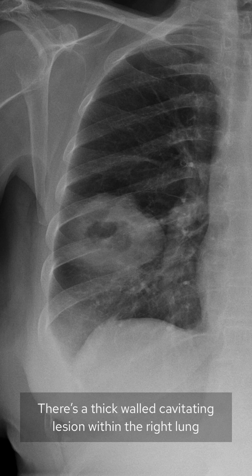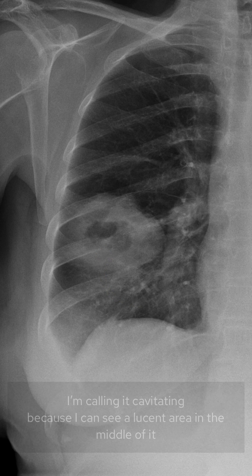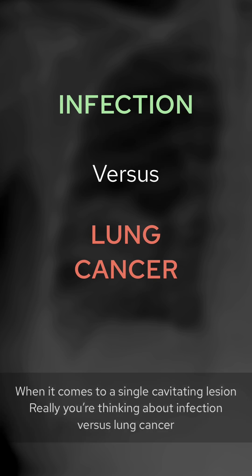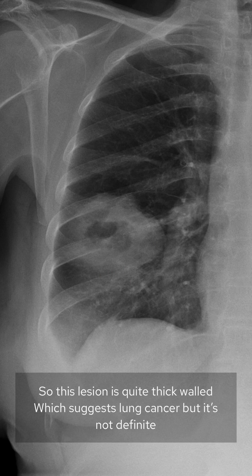There's a thick-walled cavitating lesion within the right lung. I'm calling it cavitating because I can see a lucent area in the middle of it. Although the differential for multiple cavitating lesions is wide, when it comes to a single cavitating lesion, you're really thinking about infection versus lung cancer. This lesion is quite thick-walled, which suggests lung cancer, but it's not definite.